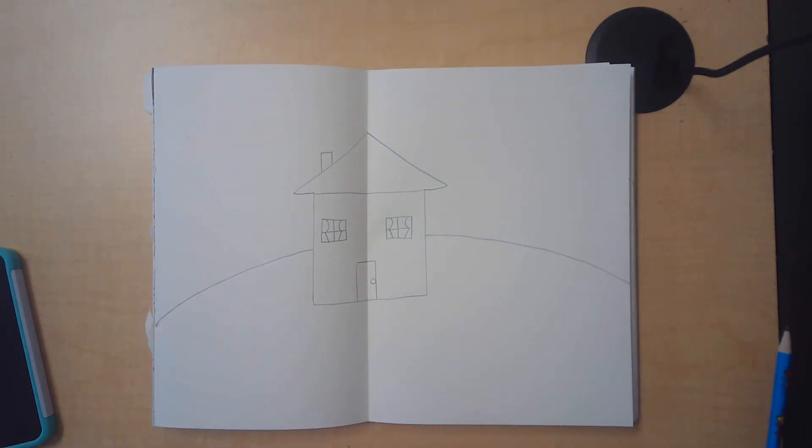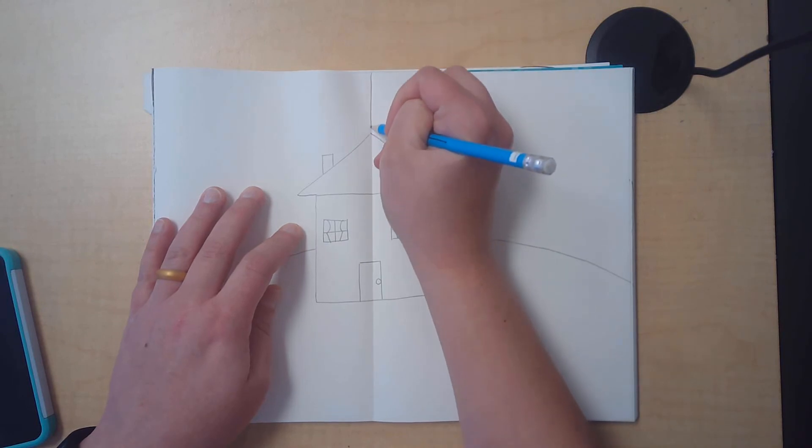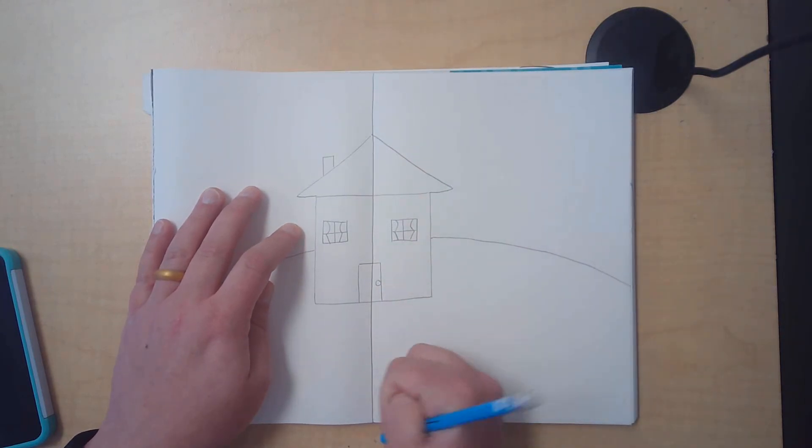Once we fold it together, we're going to unfold it and use our pencil to trace over that fold line. It's going to end up slicing our house in half.